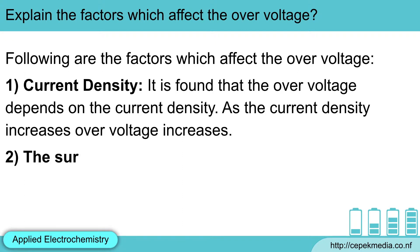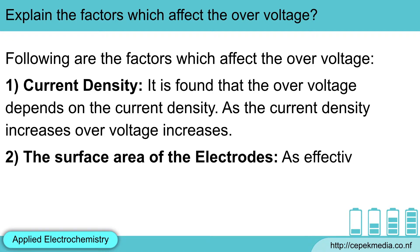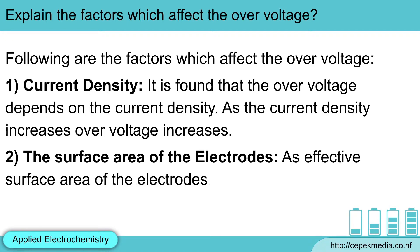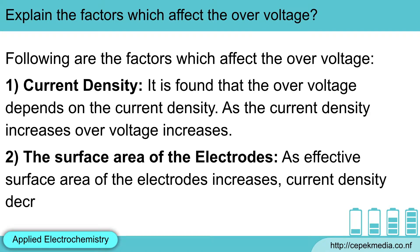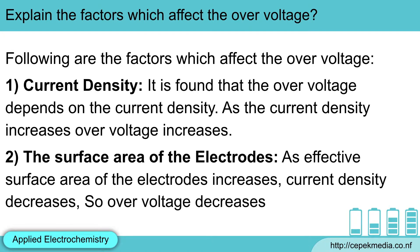Second, the surface area of electrodes. As the effective surface area of the electrodes increases, current density decreases, so overvoltage decreases.